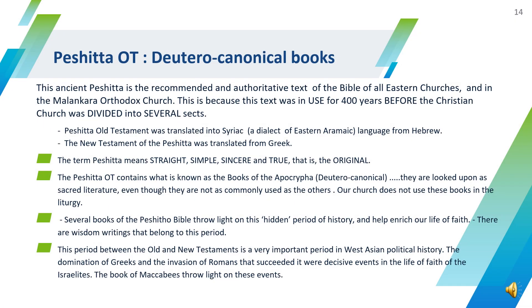The ancient Peshitta is the recommended and authoritative text of the Bible for all Eastern churches, including the Malankara Orthodox Church, because this text was in use for 400 years before the Christian church was divided into several sects. The term Peshitta means straight, simple, sincere, and true — i.e., the original. The Peshitta Old Testament was translated into Syriac, a dialect of Eastern Aramaic, from Hebrew, and the New Testament of the Peshitta was translated from Greek. The Peshitta Old Testament also contains what is known as the books of the Apocrypha or Deuterocanonical, which are looked upon as sacred literature even though they are not as commonly used as the others.